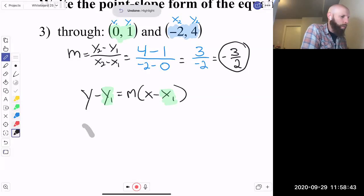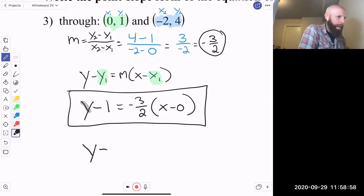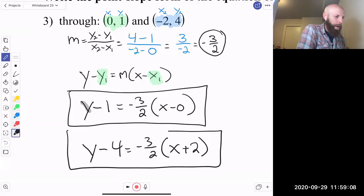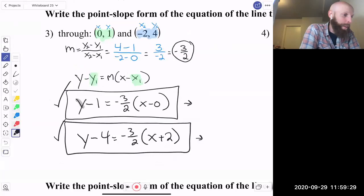One of those is y minus 1 equals negative three-halves x minus 0. There's one answer. Or the other answer you could get is where you can go y minus 4 equals negative three-halves x minus negative 2. So minus negative, I'm just going to call it a plus. This works as well. If you don't believe me, convert this and this to y equals mx plus b and you are going to find out they are exactly the same. So it is really cool that way that you get to use either point that you want. But this is correct and this is correct. So both of them are correct.